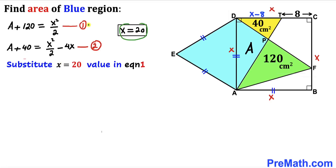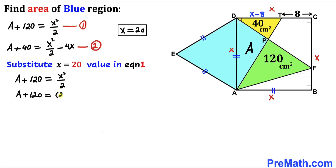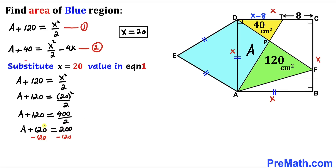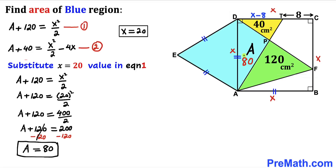Now let's substitute x equals 20 into Equation 1. Replacing x with 20, the equation becomes A plus 120 equals 20² divided by 2. On the right side, 20² is 400, and 400 divided by 2 is 200. Subtracting 120 from both sides, our A value turns out to be 80 cm². So the area of triangle APD is 80 cm².